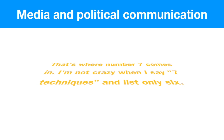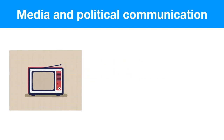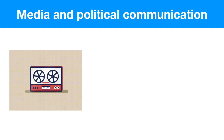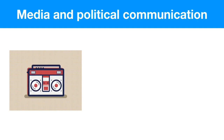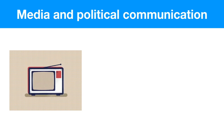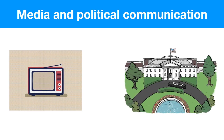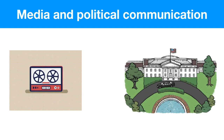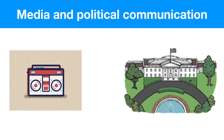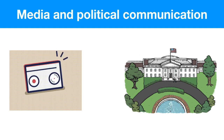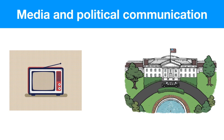The first thing we need to go over is what exactly media and political communication means. Media means any kind of information we're going to receive from outside sources, like the TV, the internet, your phone. Political communication is going to come from our government, like the White House, or even from the political parties.